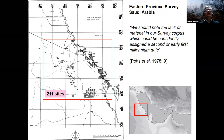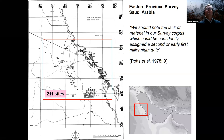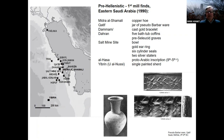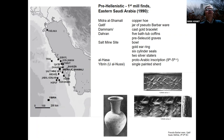Dan Potts, who was heavily involved in the Eastern Province Survey published in Atlal, also reinforces this point — commenting on the real lack of material in the survey corpus in that region. There are a few sites; I'm not saying there's nothing. But we're trying to detect nuances: periods of high activity, periods of low activity, and periods of changing levels of activity. Here's a list of a few known sites, but it's really not massively impressive when we compare it to earlier and later periods.